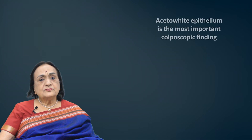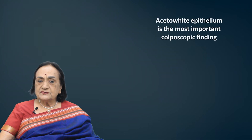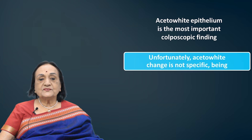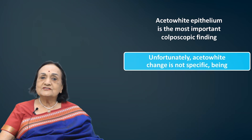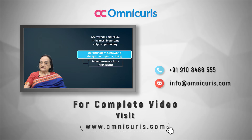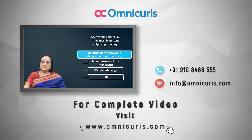Aceto-white epithelium is the most important colposcopic finding, but unfortunately aceto-white change is not specific, being common to immature metaplasia which may be transient, HPV-related changes, and also cervical intraepithelial neoplasia.